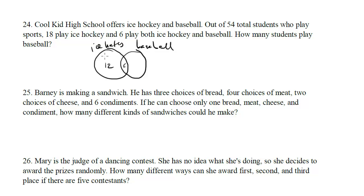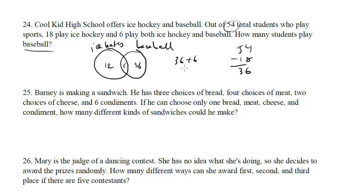Now we want to know how many play just baseball. There are 54 total students, and we've accounted for 18 in the ice hockey bubble, so 54 minus 18 leaves us with 36. That's the number who play only baseball. But since the question asks how many play baseball total — including those who play both — the answer is 36 plus 6, which is 42.